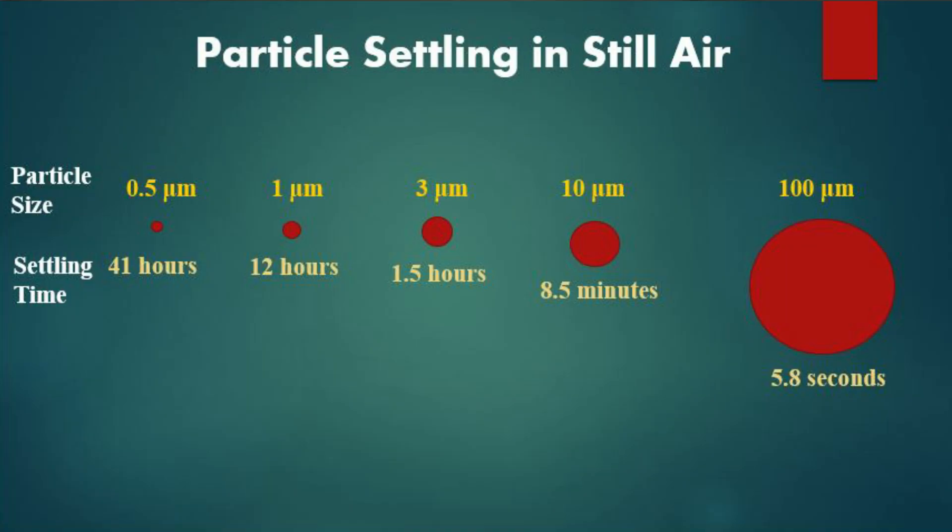Depending on the size, aerosols can settle down on a surface or stay in the air for a long period of time. If the aerosol size is around 1 micrometer, it can stay in the air for 12 hours, whereas if the size is 3 micrometers, it can float in air for only one and a half hours. Larger aerosols settle down quickly on surfaces. Aerosols whose size is below 5 micrometers can contain viral RNA and have the ability to infect others; 5-micrometer aerosols can travel 10 meters, which is larger than a typical room. Research has shown that a confined ICU room is more contagious than the open wards of hospitals.